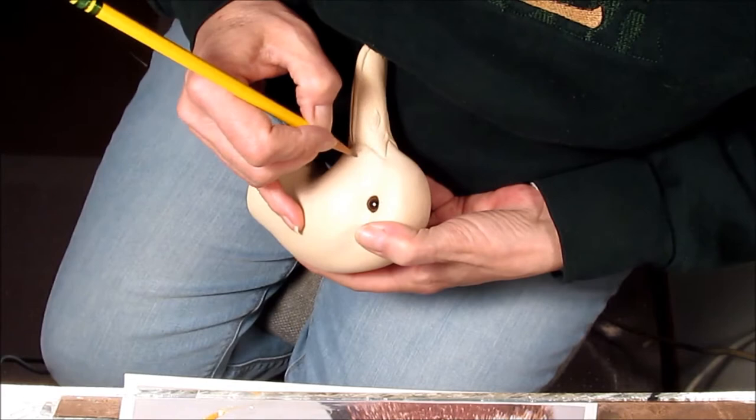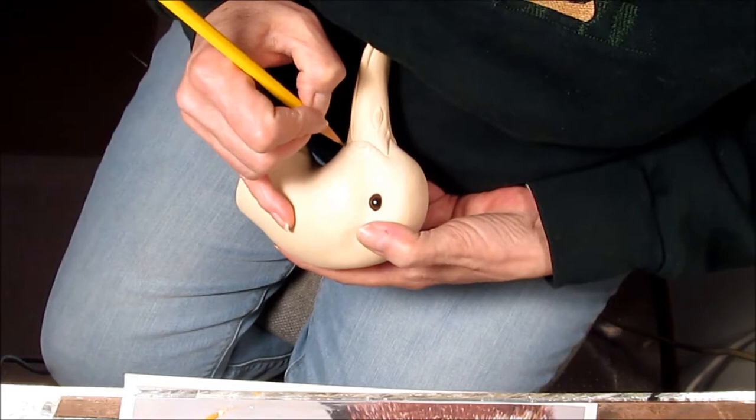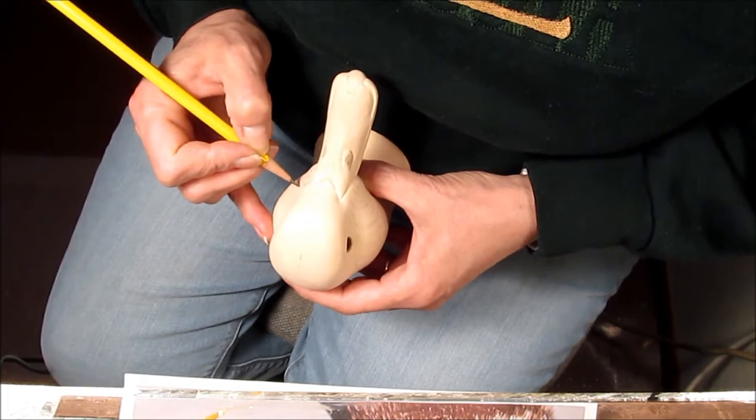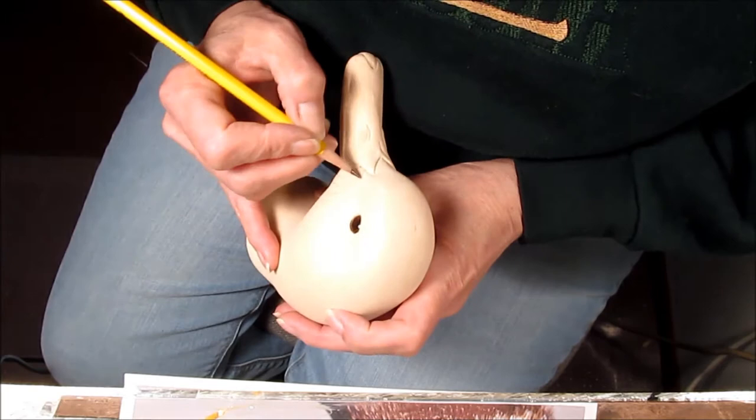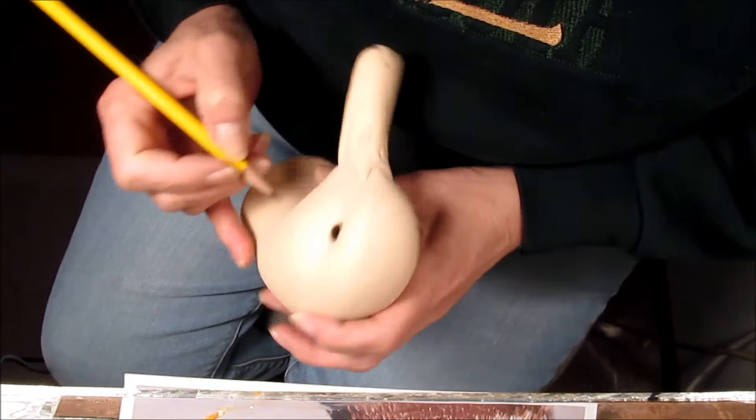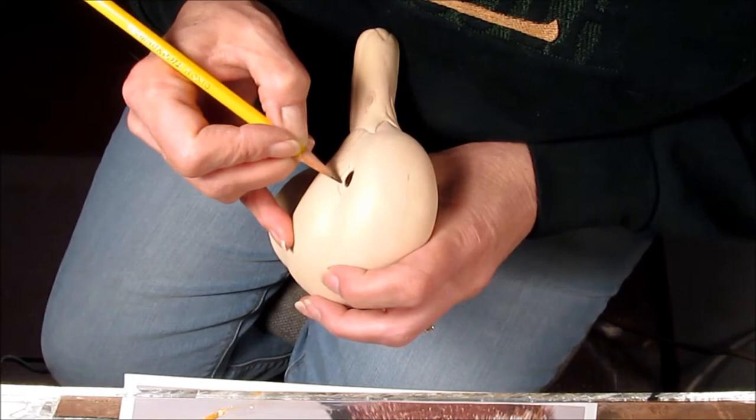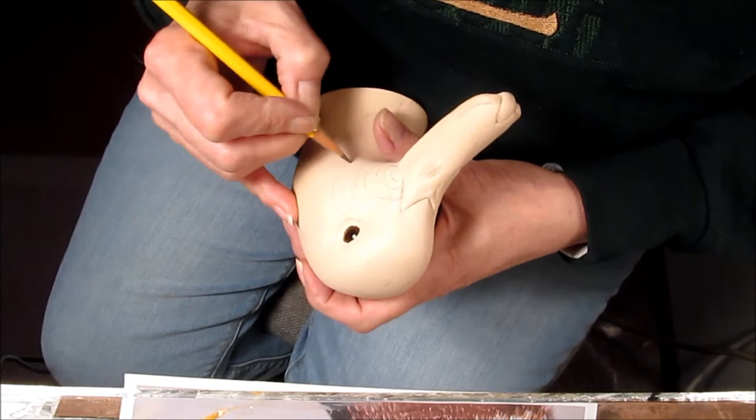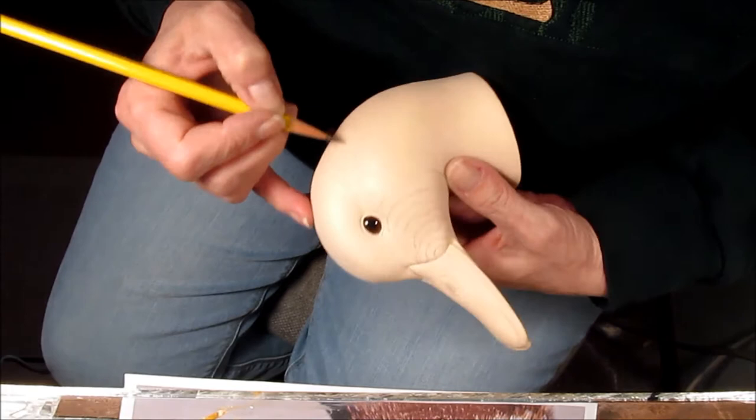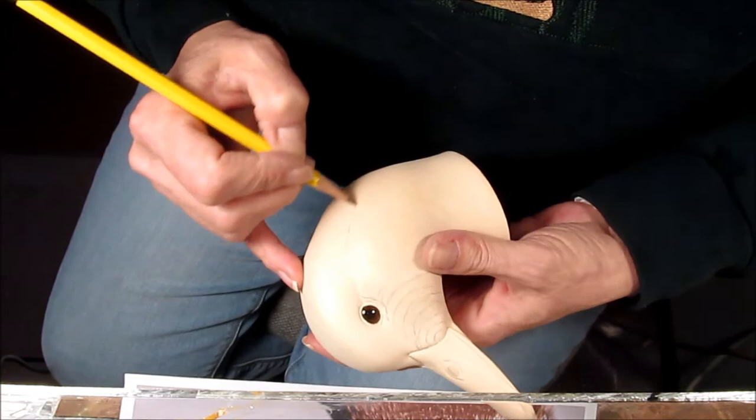So I'm going to do the same thing on this side. Kind of be aware of what you did on the other side, make sure that you're remaining even. Again, these are just guidance lines. Now along under the eye, this distinct area where the feather flow is different than these cheek areas. Again, that jowl line.